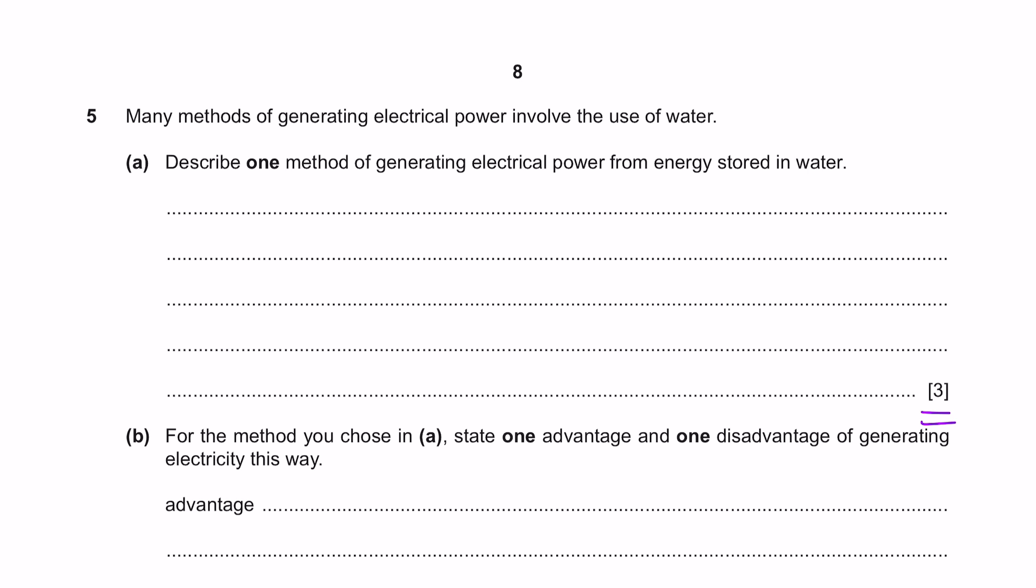Question 5. Many methods of generating electrical power involve the use of water. Question A: Describe one method of generating electrical power from energy stored in water. Now, whenever you are asked to describe how to generate electricity from an energy source, make sure to include two key ideas. The first one is turbine and the second is generator. The idea is that you want to use the energy stored from your resource and have the generator to convert the kinetic energy produced by the turbine converted into electricity.